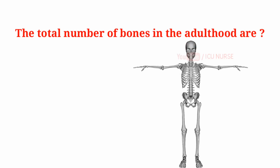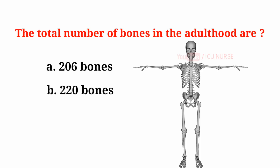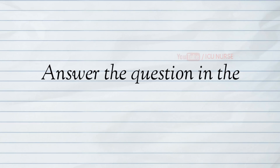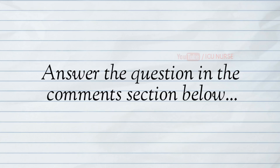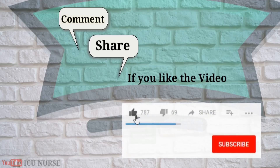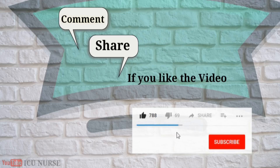The total number of bones in adulthood are: A. 206 bones, B. 220 bones, C. 212 bones, D. 217 bones. And the answer is A. 206 bones.